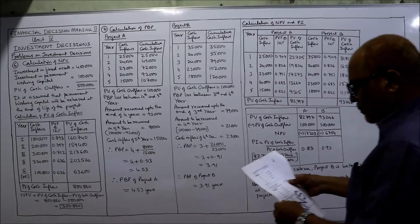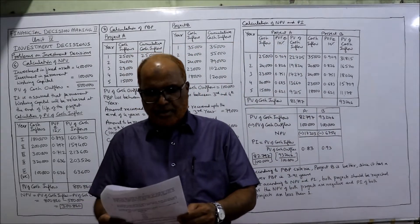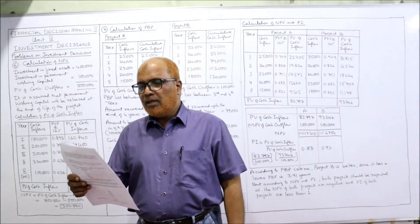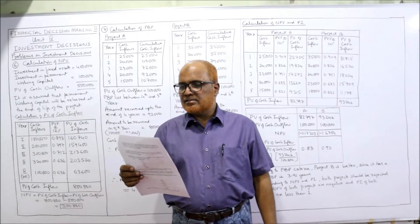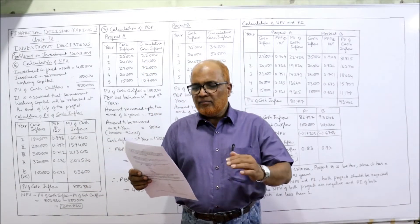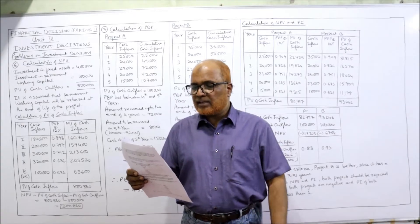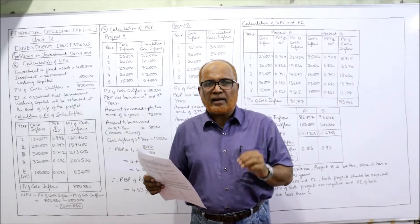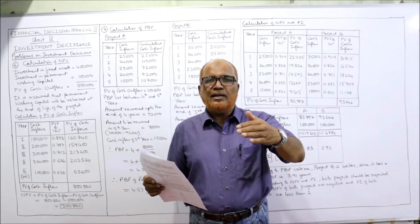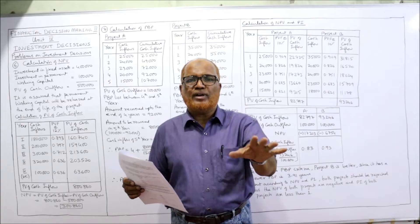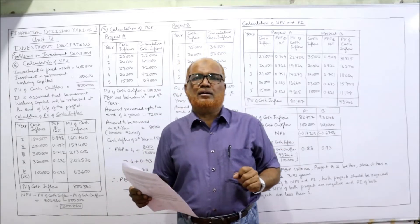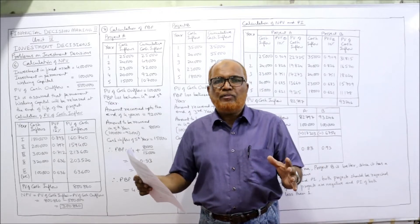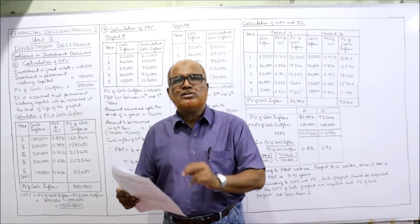Problem number six: calculate NPV (net present value) from the following data. Investment in fixed assets: 4 lakh. Investment in permanent working capital: 1 lakh. That means the cost of the project is 4 lakh, and in order to continue the project there is a permanent working capital required of 1 lakh. So the total PV of cash outflow is 4 lakh plus 1 lakh = 5 lakh.